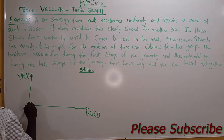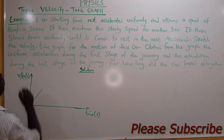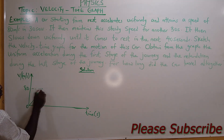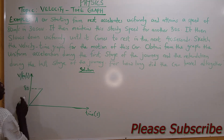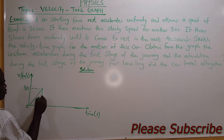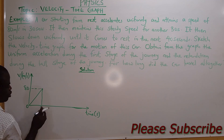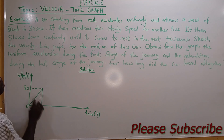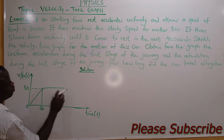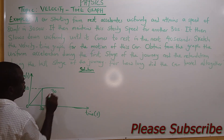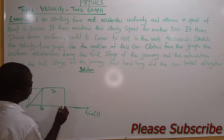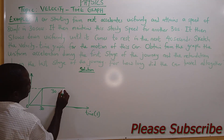The car accelerates uniformly and attains a speed of 80 meters per second in the first 30 seconds. It then maintains a steady uniform speed for another 30 seconds — put 30 here. It then slows down uniformly until it comes to rest in the next 40 seconds.